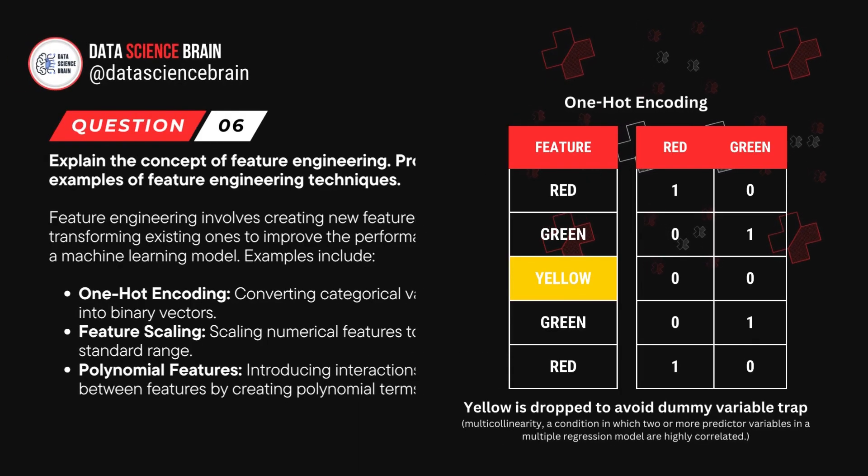Question number 6. Explain the concept of feature engineering. Provide examples of feature engineering techniques. Feature engineering involves creating new features or transforming existing ones to improve the performance of a machine learning model.